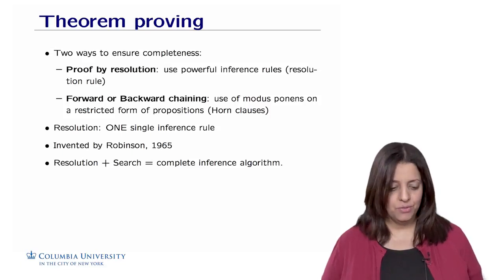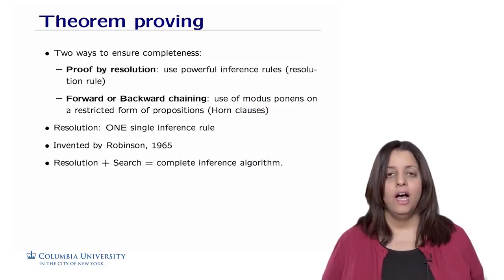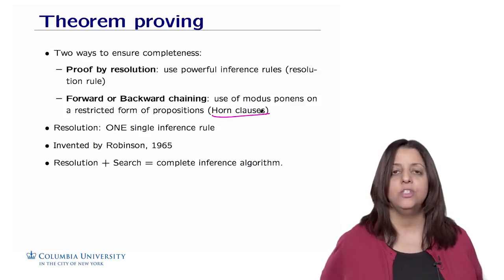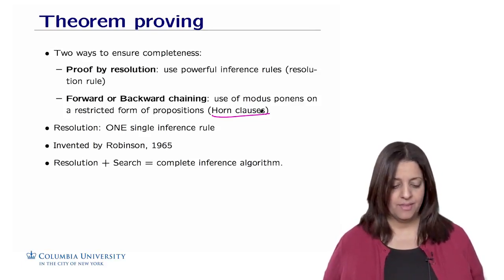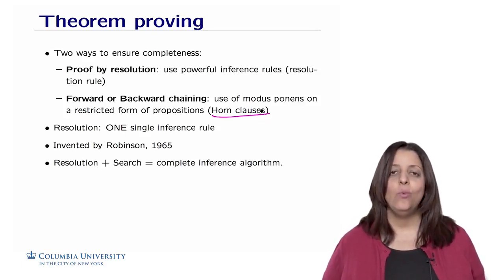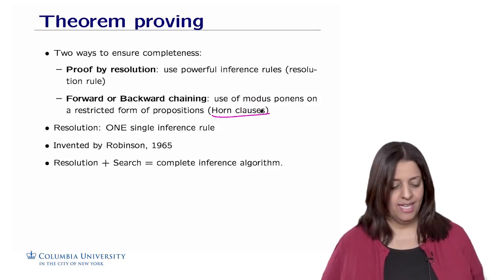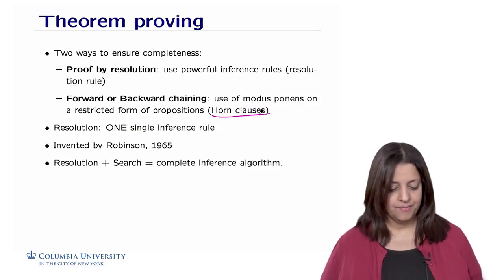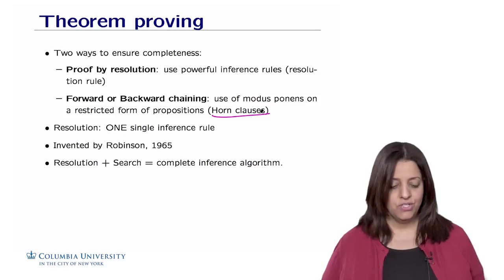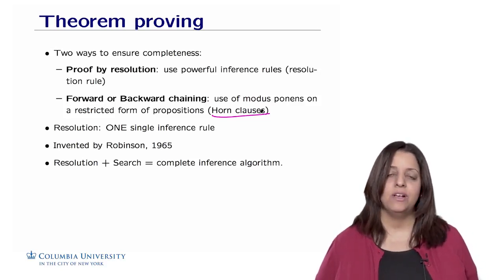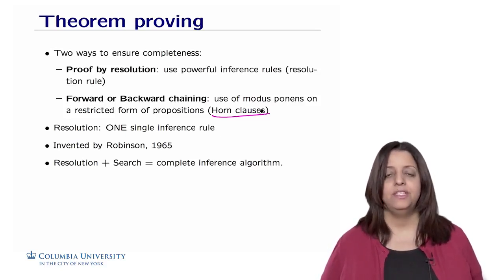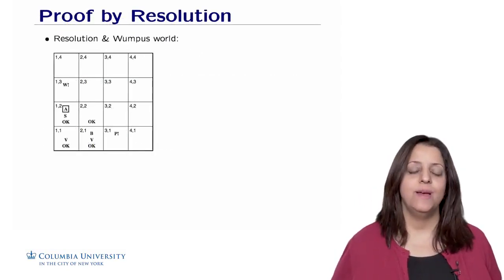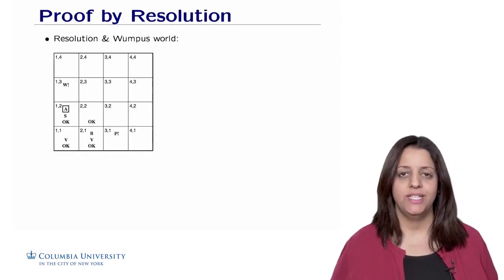It is possible to use either resolution or backward chaining on Horn clauses to address the problem of completeness. Resolution is a single inference rule invented by Robinson in 1965. Resolution plus search turned out to be a complete and sound inference algorithm. I will now illustrate the concept of resolution through the Wumpus World example.